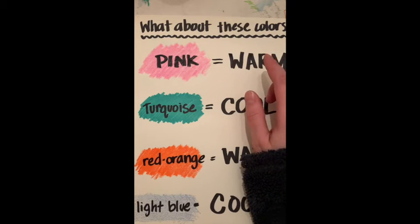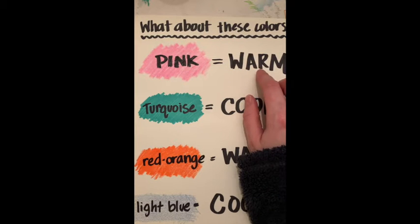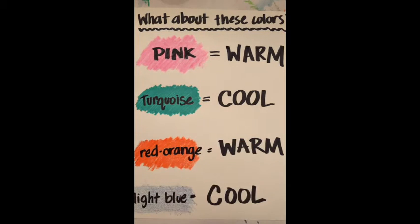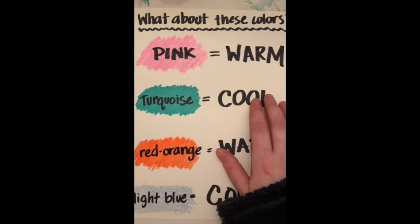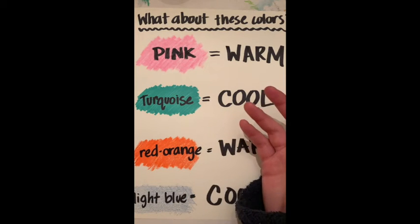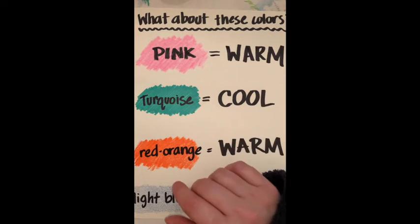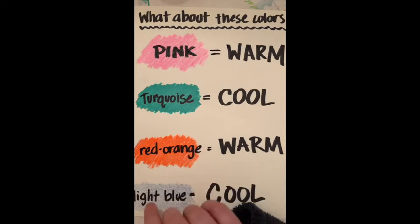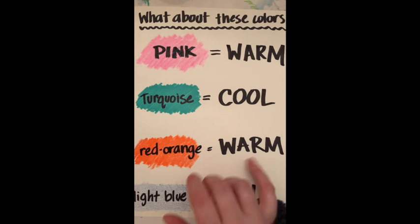Turquoise is like blue and green mixed together, so it would be cool because both blue and green are cool colors. What about red-orange? Well, red and orange are both warm colors, so a mix of them would still be warm.